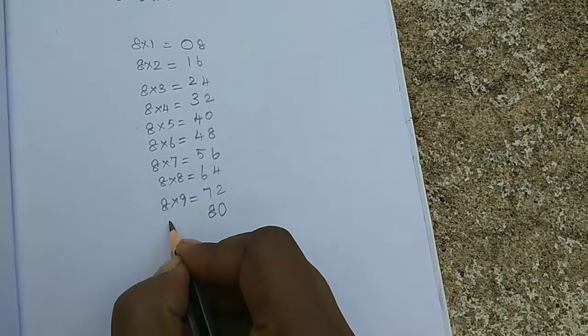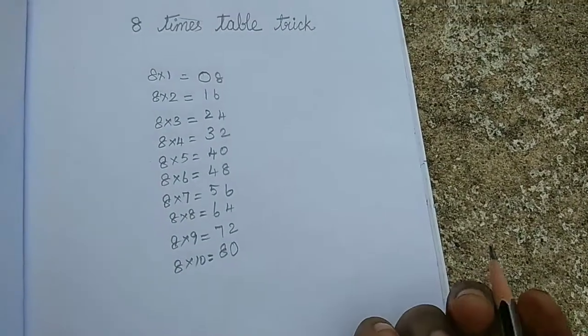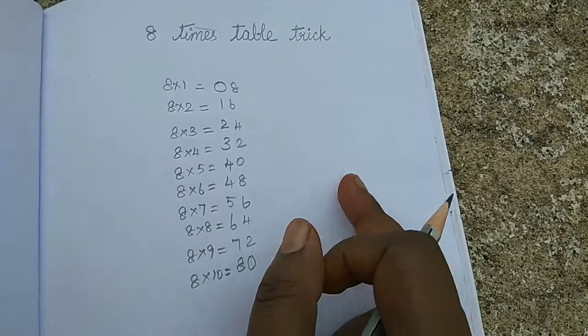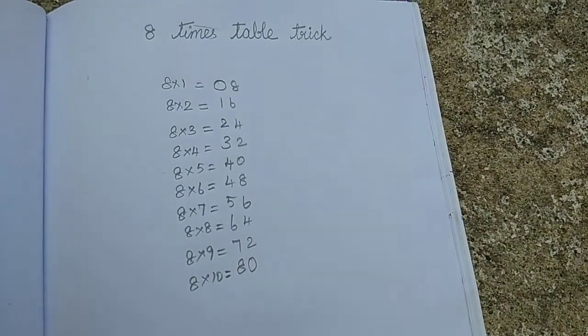8 × 10 = 80. This is the trick with the 8 times table. I hope you understand this.